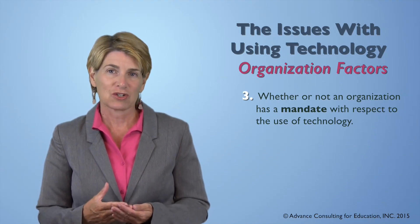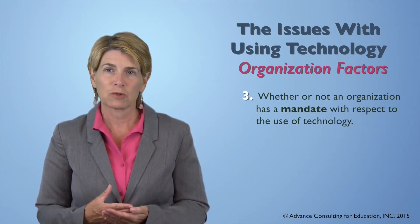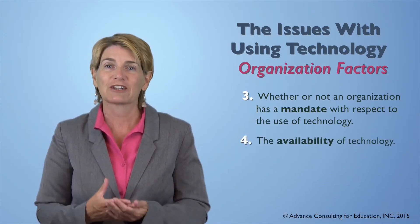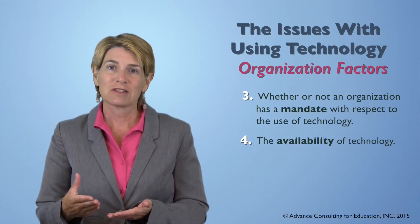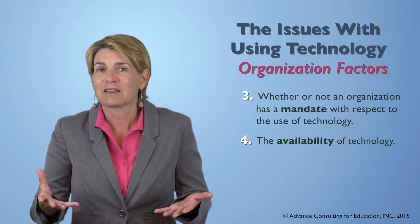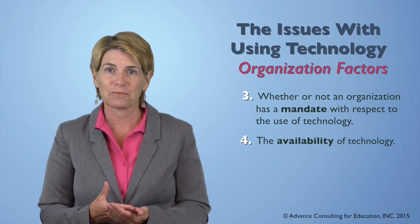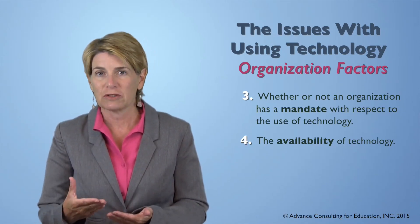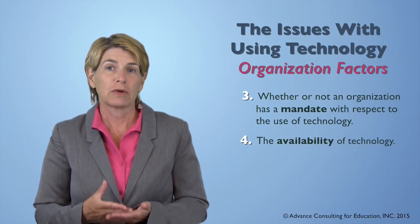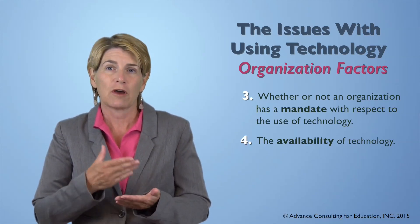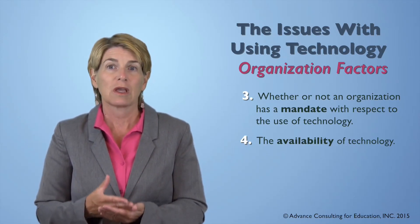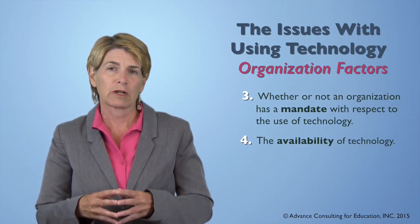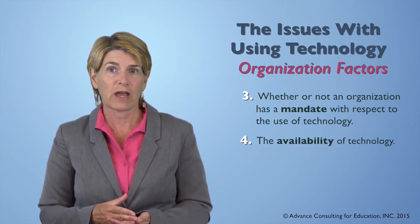A final organizational factor is the actual availability of technology — it's a very practical factor. If the organization doesn't have the technology available, it obviously won't get used in the classroom. This comes down to budgets: using technology is very expensive. Hardware purchases and software licenses are not cheap. So the availability of technology within the organization is a very significant organizational factor.